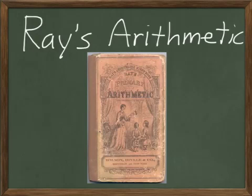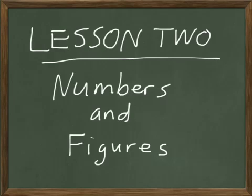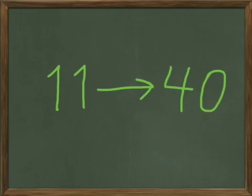Okay, today in Ray's Arithmetic we're going to go on to Lesson 2, and Lesson 2 continues looking at numbers and figures 1 through 100. Last time we did 1 through 10, today we're going to do 11 through 40.